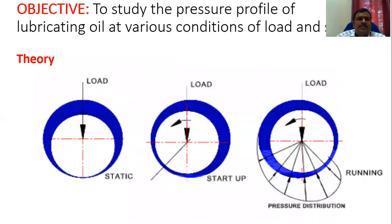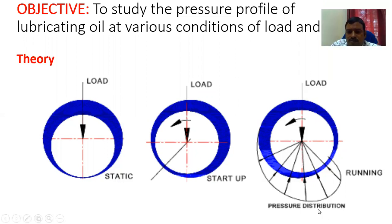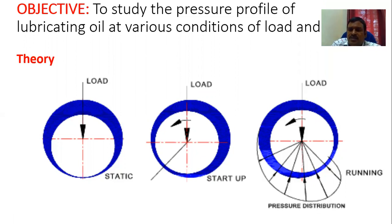The objective of this study is to measure the pressure profile of lubricating oil at various conditions and speeds. There are many parameters which affect pressure distribution: speed, viscosity, temperature, and load. During this analysis, we will consider viscosity and temperature as constant, because the apparatus runs for a short period of time and temperature and viscosity variation will be marginal.